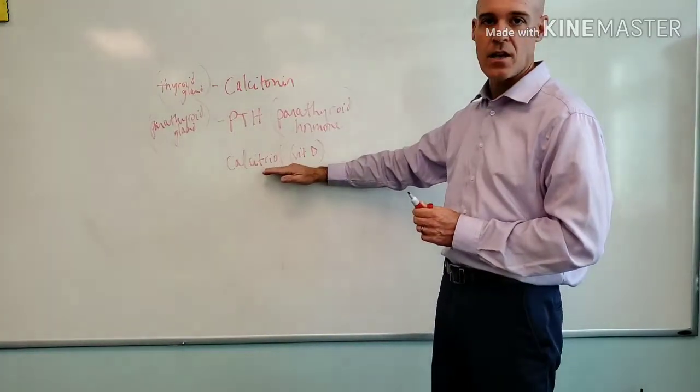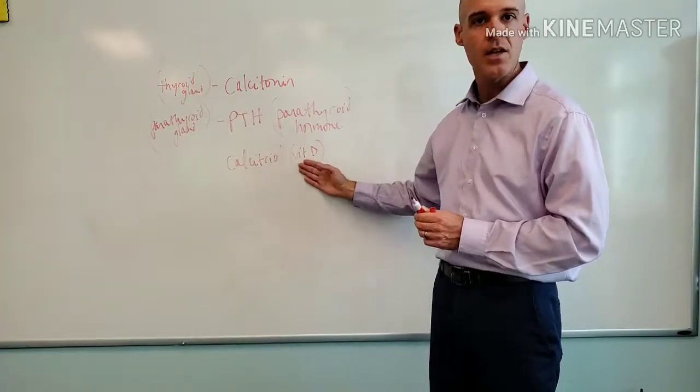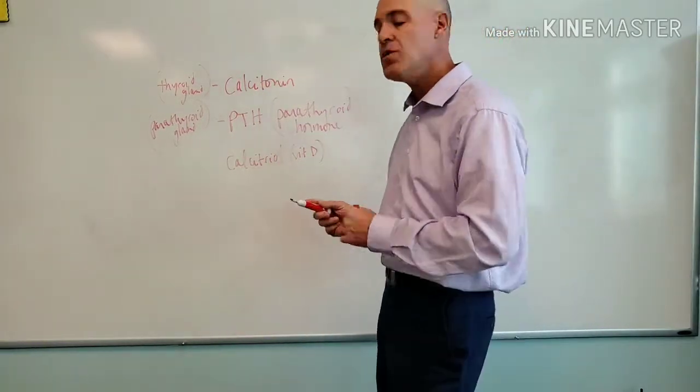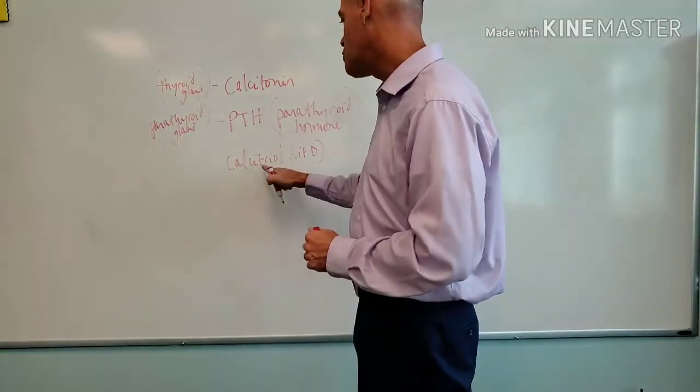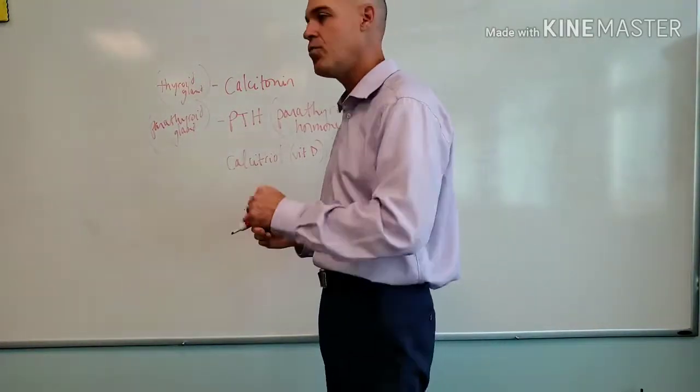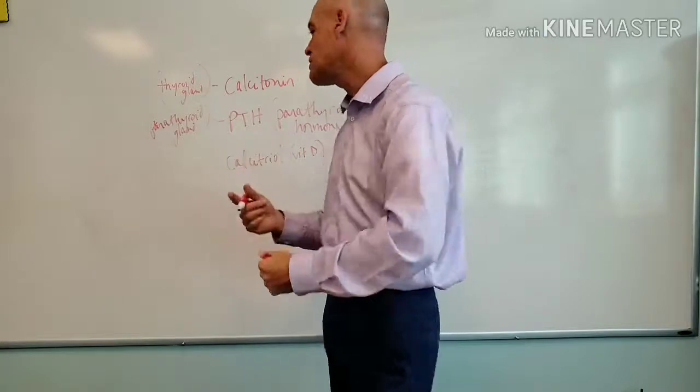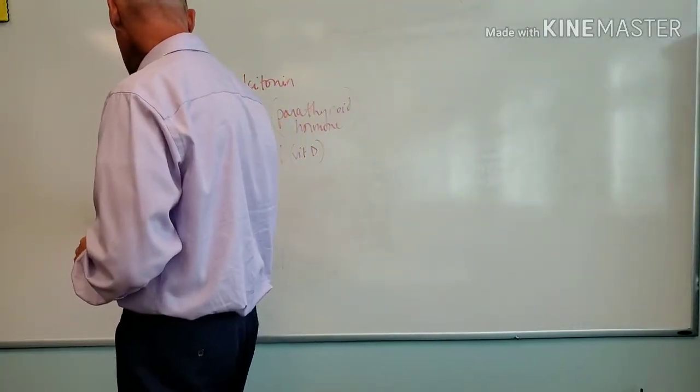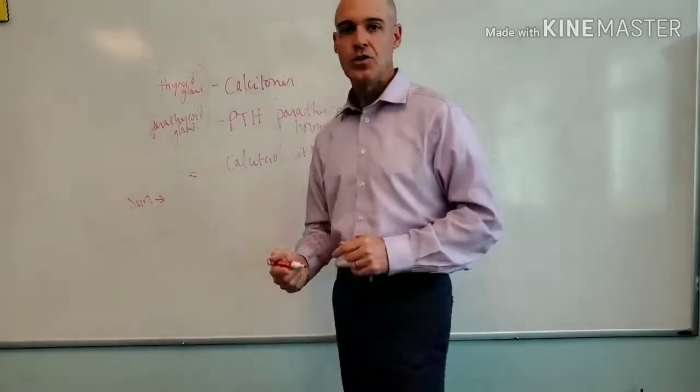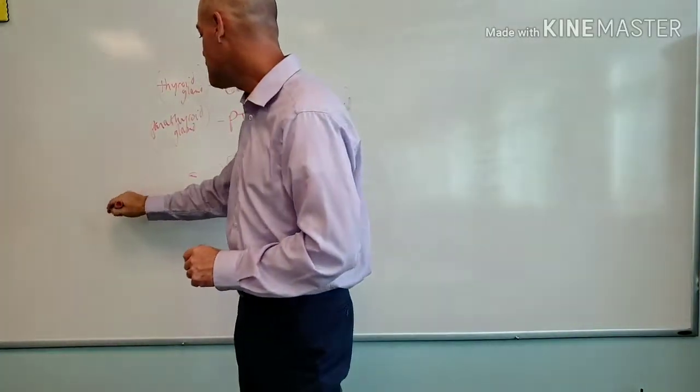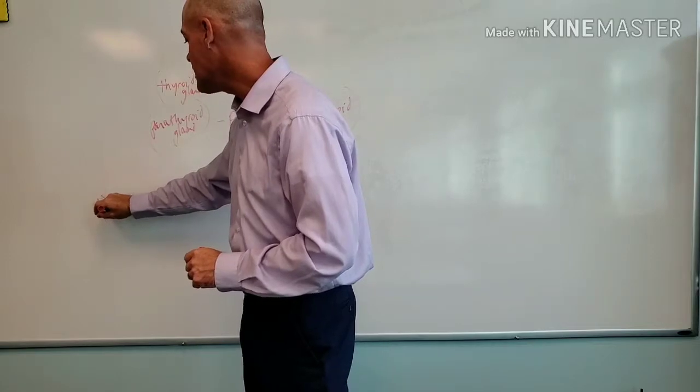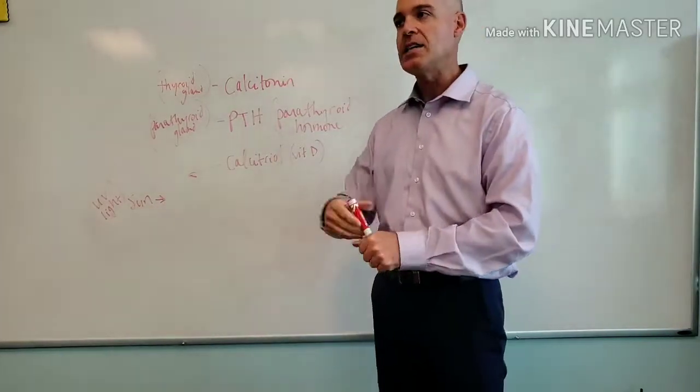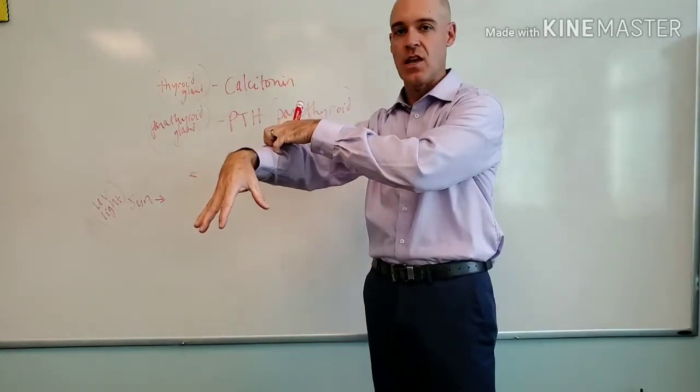Now this final one is kind of unique because your body does produce vitamin D, right? It produces calcitriol. But how do we get it? A little bit different. We need something in order to produce calcitriol. What do we need to start the whole process? We need the sun.